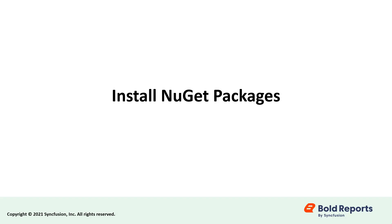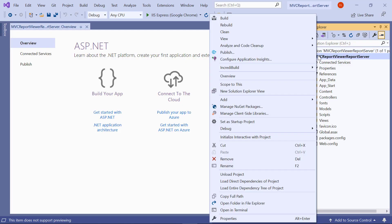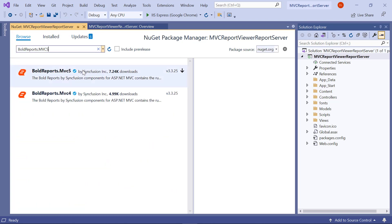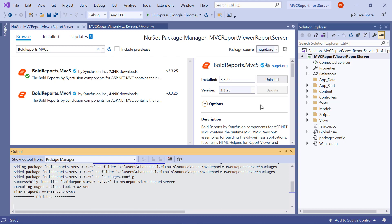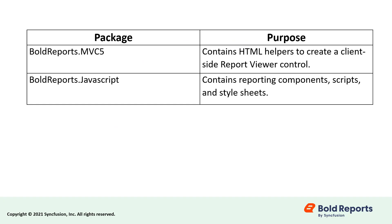Now let's install the NuGet packages. In the Solution Explorer tab, right-click the project or solution and choose manage NuGet packages. In the browse tab, search for the boldreports.mvc5 package and install it in your MVC application. Similarly, install the boldreports.javascript package. The boldreports.mvc5 package contains HTML helpers to create a client-side report viewer control. The boldreports.javascript package contains reporting components, scripts, and stylesheets.